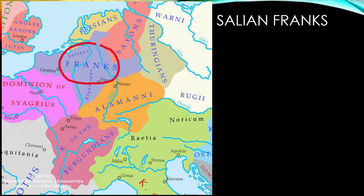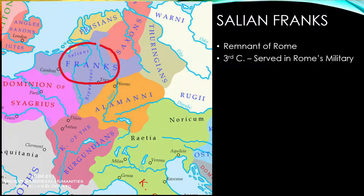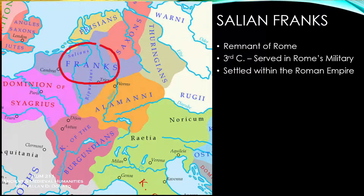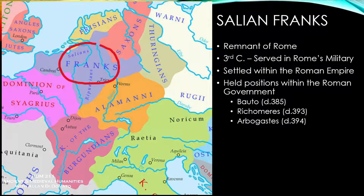The Franks were Germanic peoples who originated around the 3rd century north of the Rhine region and became involved in the Roman military — at least the Salian Franks did. There were actually a number of different Frankish tribes. In a way, they preserved Roman culture to a degree. They were actually given permission to settle in Roman territory.